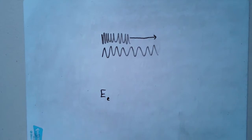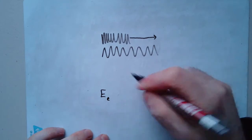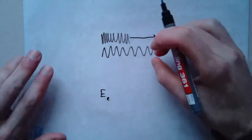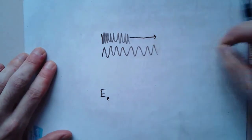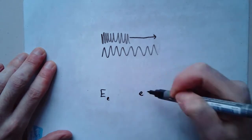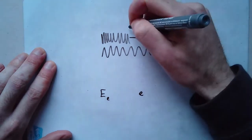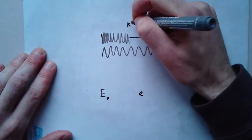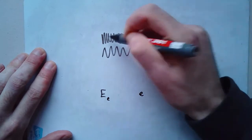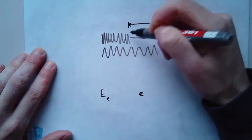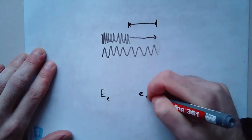What does the amount of energy it stores depend on? Well, the first thing is how far I've stretched it. If I stretch it this far, it's going to store this much energy. If I stretch it this far, it's going to store more energy. This far, even more energy. So it depends on what we call the extension. The extension is this distance here. It's not the whole length of the spring. It's just how far it's gone. The extension goes up, energy goes up.